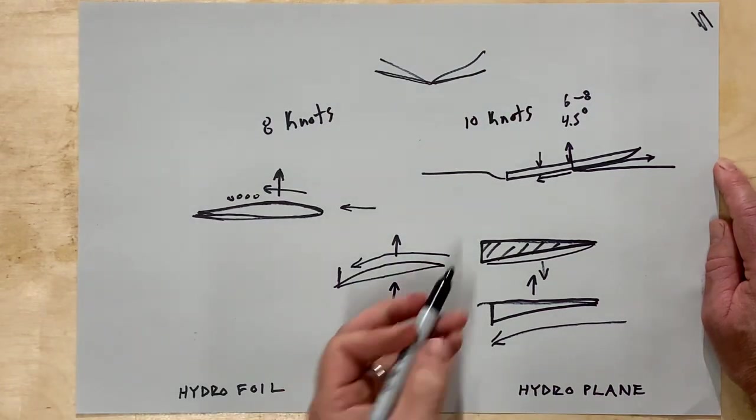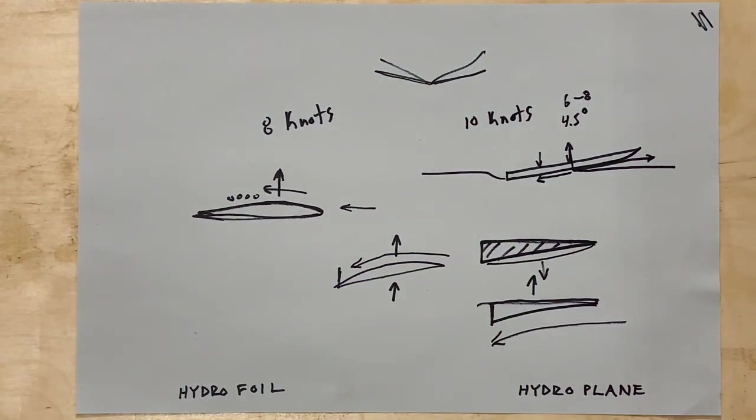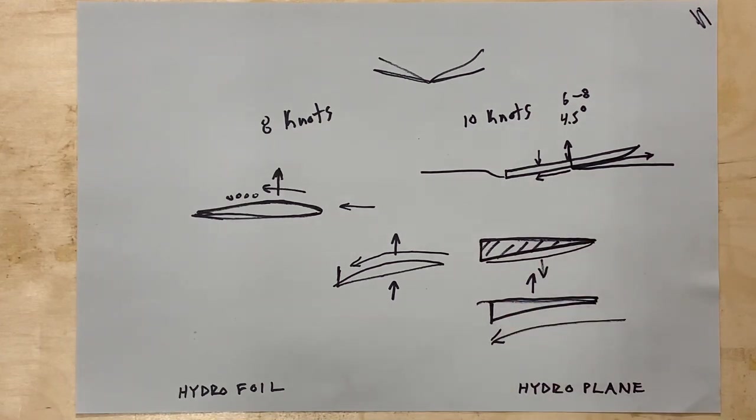So hydroplanes don't really work in less than 10 knots, they just... It has to do with the speed of the velocity of the water. But at 10 knots you'll notice that a water skier will be completely hydroplaning at 10 knots.